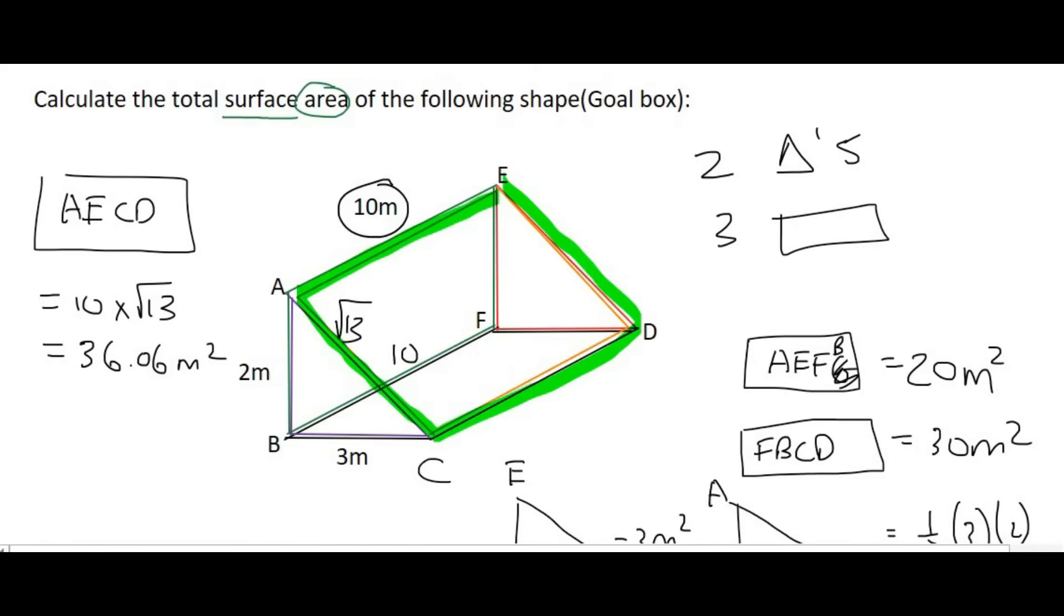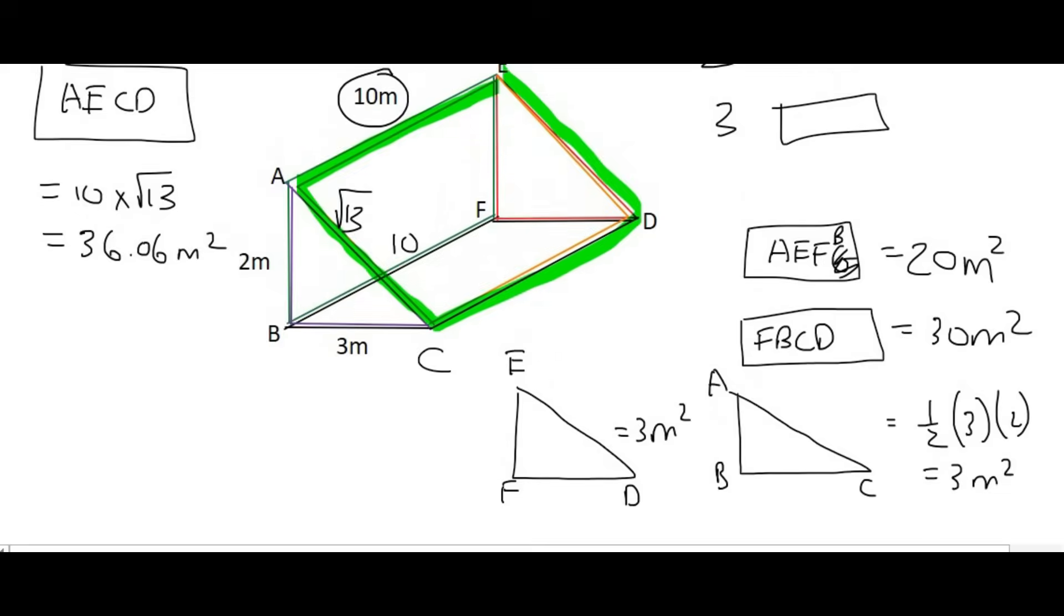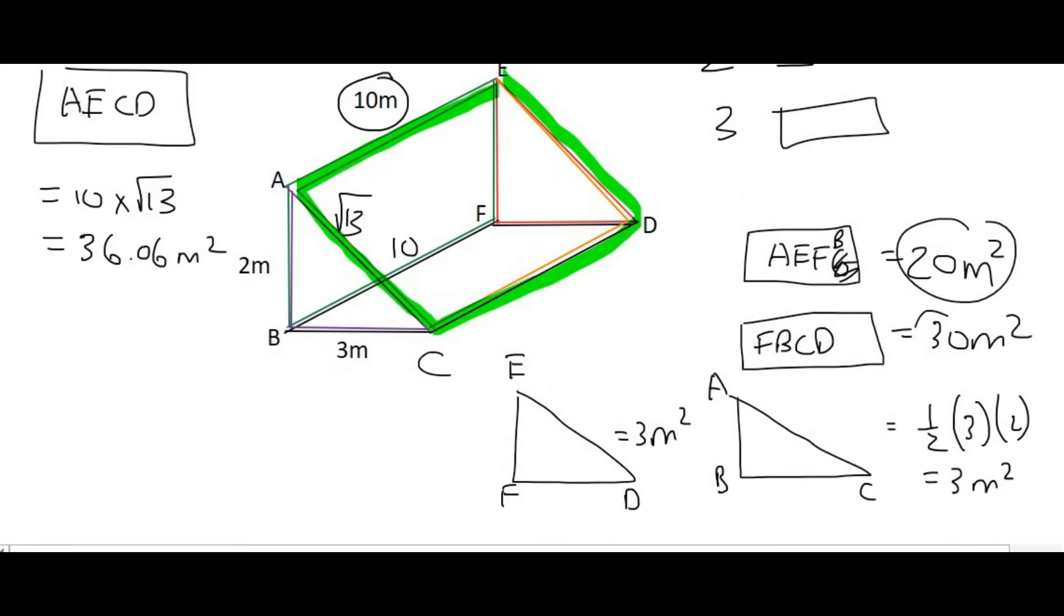And so to find the total surface area you would simply add up all of these answers that we have. So we've got the three rectangles over there, and then we've got the two triangles over there. And so adding them all up together is going to give us a total surface area of 92.06 meters squared.